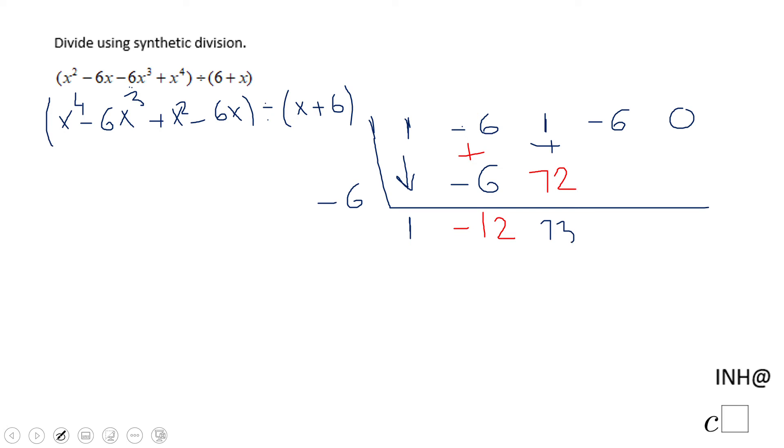Negative 6 times 73. That's it. Negative 438. And again, we're gonna add here these two guys.